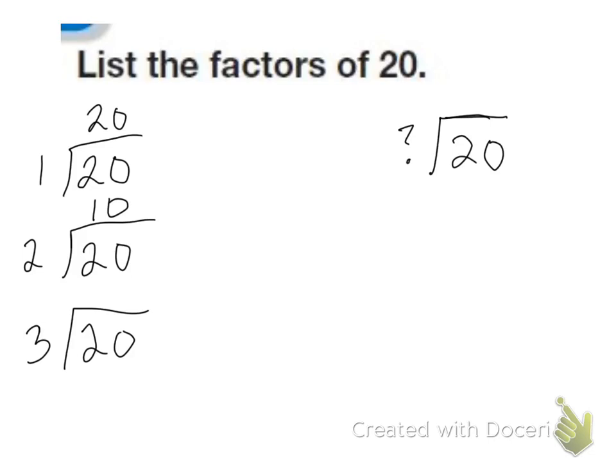Well, 3 can go into 20 six times, and that's 18. So that's going to leave a remainder. So 3 can't. So we'll do 20 divided by 4 is 5.